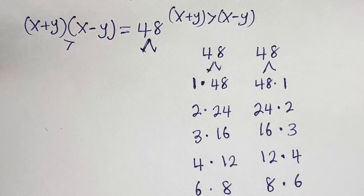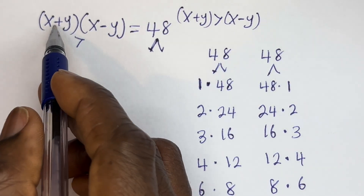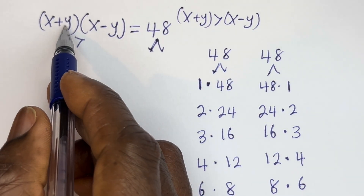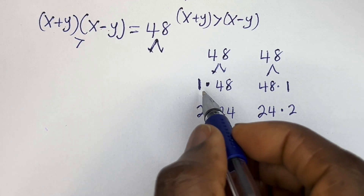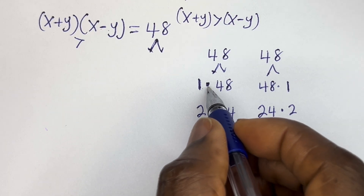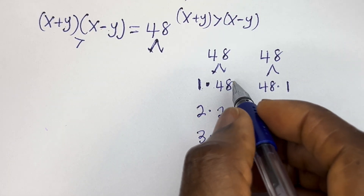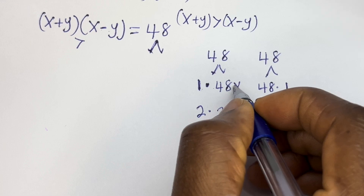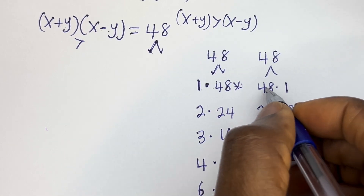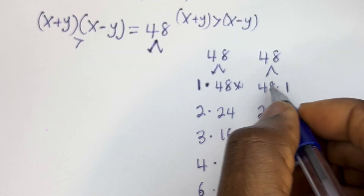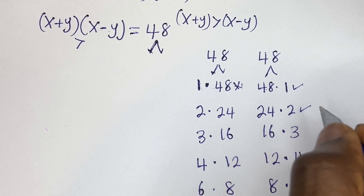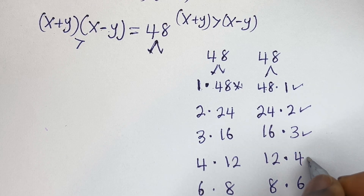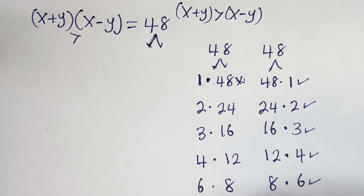Now let's see. We said S plus Y is greater than S minus Y, so the first factor must be greater than the second. Here 1 is less than 48, so that pair is rejected. But 48 is greater than 1 — this is accepted. 24 × 2 is accepted, 16 × 3 is accepted, 12 × 4 is accepted, and 8 × 6 is also accepted.